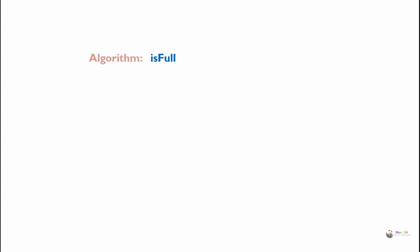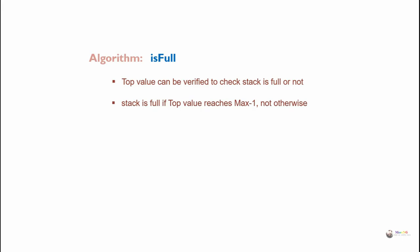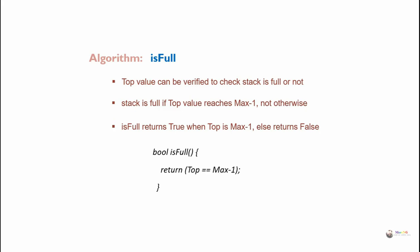Second algorithm for isFull: we check if the value of top is equal to max minus one. isFull returns true when top equals max minus one, else returns false. The isFull algorithm returns a boolean value, either true or false, to indicate whether the stack is full or not. In order to find this, we check if the value of top is equal to max minus one, returning true if so, otherwise returning false.